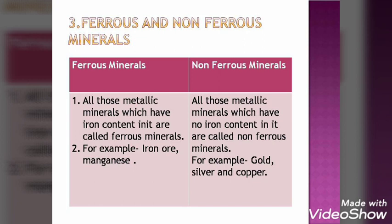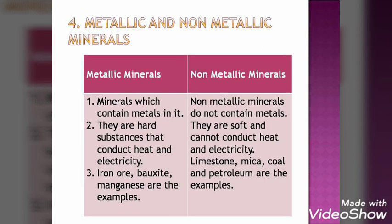The last distinction is between metallic and non-metallic minerals. Minerals containing metal are metallic minerals. Minerals which do not contain metals are non-metallic minerals. As they are metallic, they are hard and they conduct heat and electricity. Non-metallic minerals are soft and cannot conduct heat and electricity. Examples of metallic minerals are iron ore, bauxite, and manganese. Limestone, mica, coal, and petroleum are non-metallic — they do not contain metal and are soft.